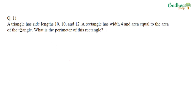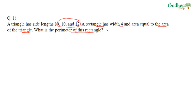Let's take the first question. A triangle has side lengths of 10, 10, and 12, and a rectangle has a width of 4 and area equal to the area of the triangle. We need to find the perimeter of this rectangle. We can get the area of the triangle using these three sides, then compare it with the area of the rectangle. Once we know both the width and length, we can get the perimeter.